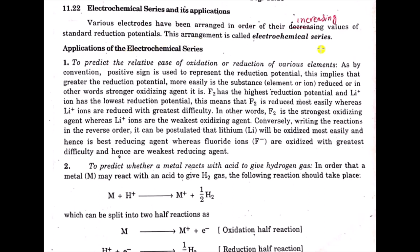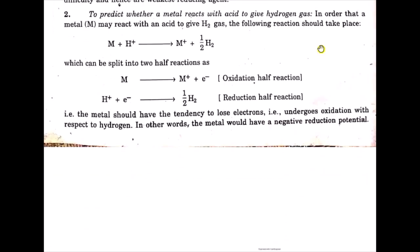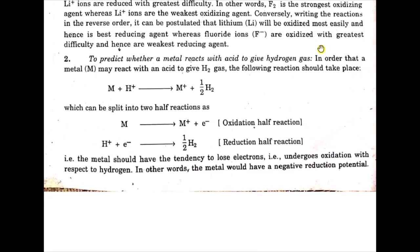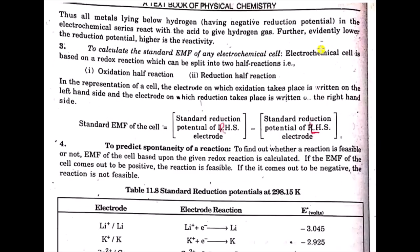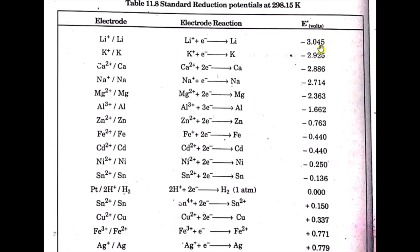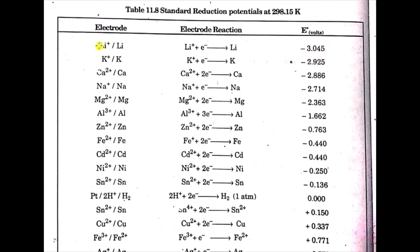In the Electrochemical Series we note each electrode, its reaction, and its reduction potential. For example, the lithium electrode: when a lithium ion gains an electron it is converted into lithium metal, which means it shows reduction. Its half-cell reduction potential is minus 3.041 volts.